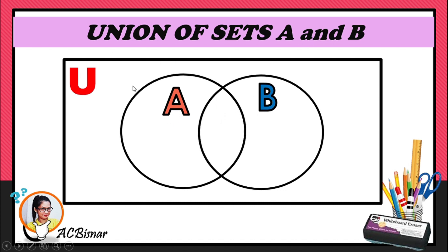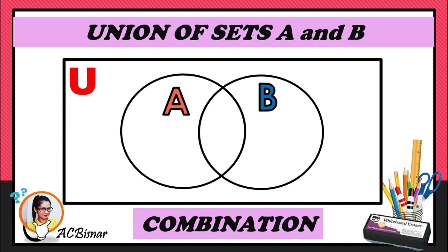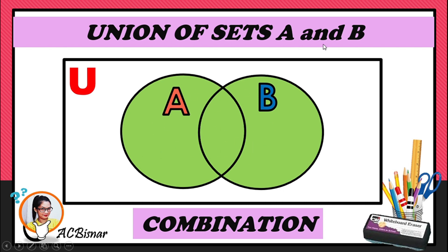To get the union of sets A and B using a Venn diagram, remember the word 'combination.' You're going to combine the elements of A and the elements of B. The shaded portion covering every element in A and in B will be your answer — that is the union of sets A and B.